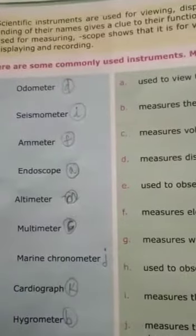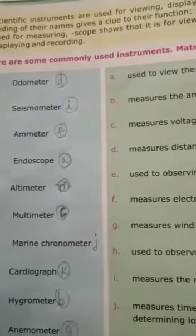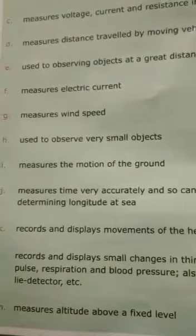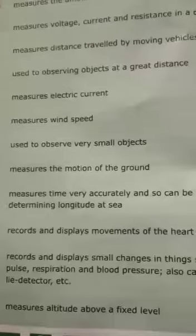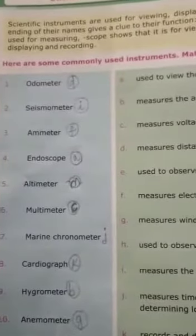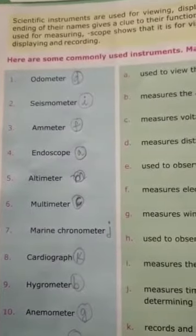Next is altimeter. The answer is M: it measures the altitude above a fixed level, to measure the height. Altimeter is used. Next is multimeter.